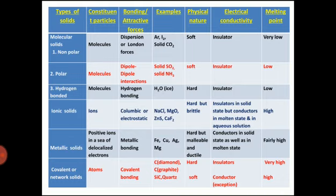The last type is covalent or network solid. The constituent particles are atoms, and the binding force is covalent bonding. Examples: diamond, graphite, quartz, silicon carbide. Physical nature: hard as well as soft. If hard, the electrical conductivity is insulator; if soft, it is a conductor. For example, graphite — though made up of carbon, a non-metal — conducts electricity. Melting point: fairly high for insulators and high for conductors.